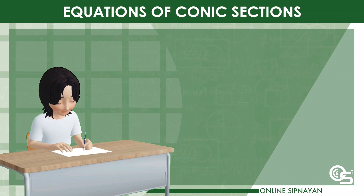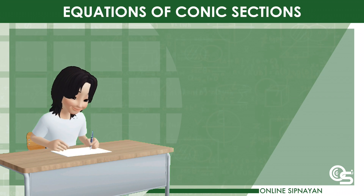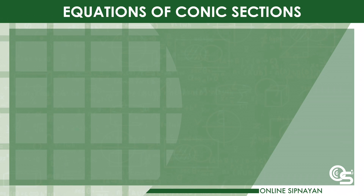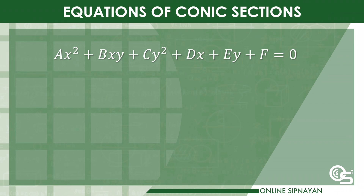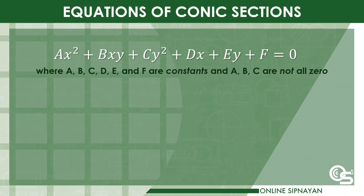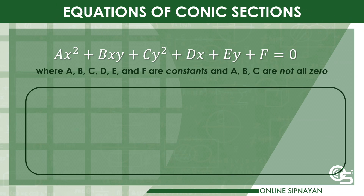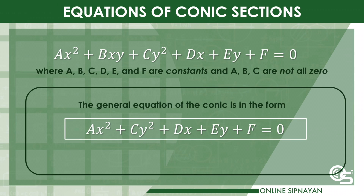Let's proceed to equations of conic sections. One way to represent a conic section is through the general quadratic equation in x and y, where a, b, c, d, e, and f are constants and a, b, and c are not all zero. We will only be discussing conic sections whose axes are parallel to the x-axis and the y-axis. The equations for those types of conics will not have any xy term. So if b equals zero, then the general equation of the conic will be in the form: ax² + cy² + dx + ey + f = 0, where a and c are not both equal to zero.